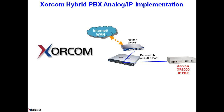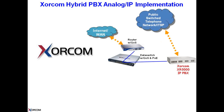The router connects to the internet, and it does its job in providing internet access to the computers and the network. The telephone system connects to the telephone service provider through the Public Switch Telephone Network, or the PSTN, and connects through either analog telephone lines or T1 or E1 if you're outside of the United States of America.